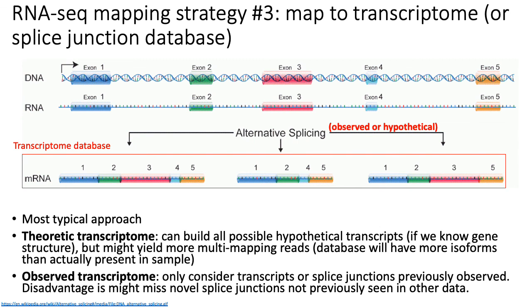The two ways of building the database are theoretic or observed. The theoretic transcriptome approach says: if I know where all the exons are, I can build all possible hypothetical transcripts by combining exons in all the ways they can be combined. This creates a large database of possible transcriptomes, and when you have a new RNA-seq experiment you map reads against all of those possible isoforms, covering most of the isoforms being generated.